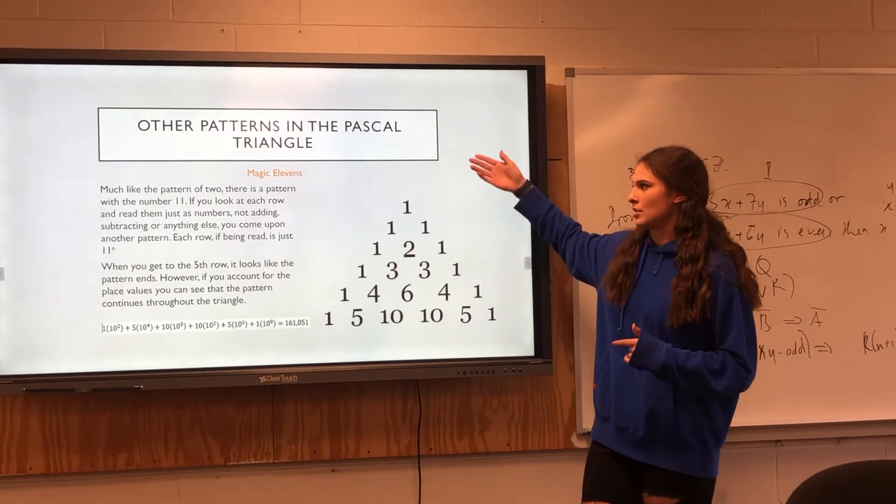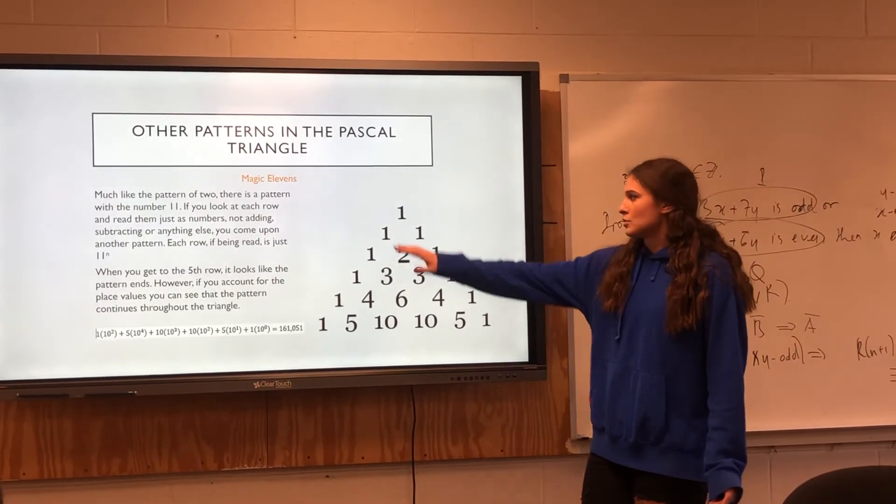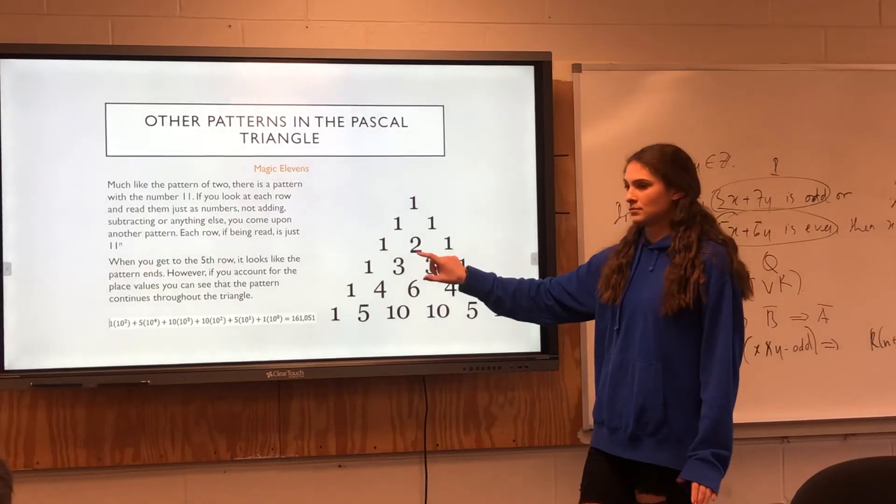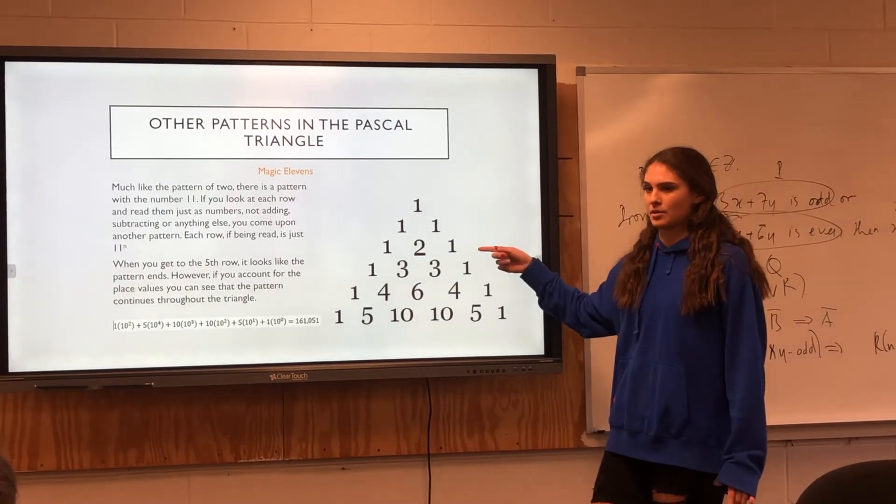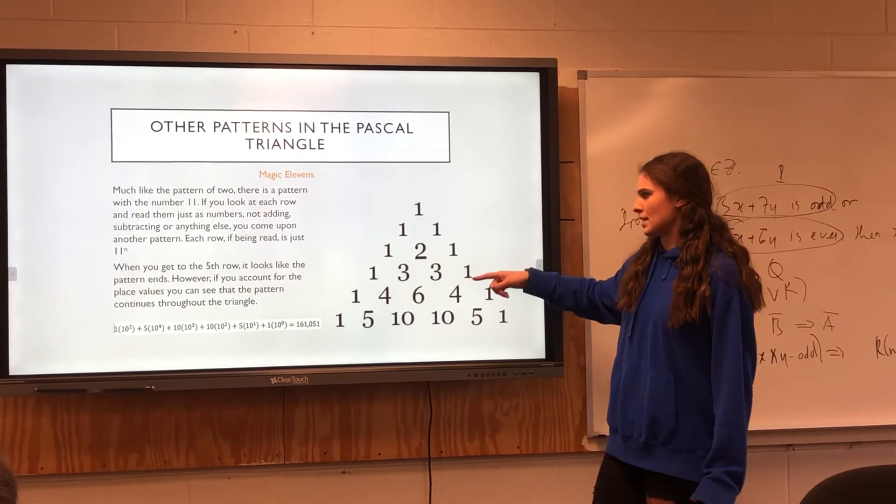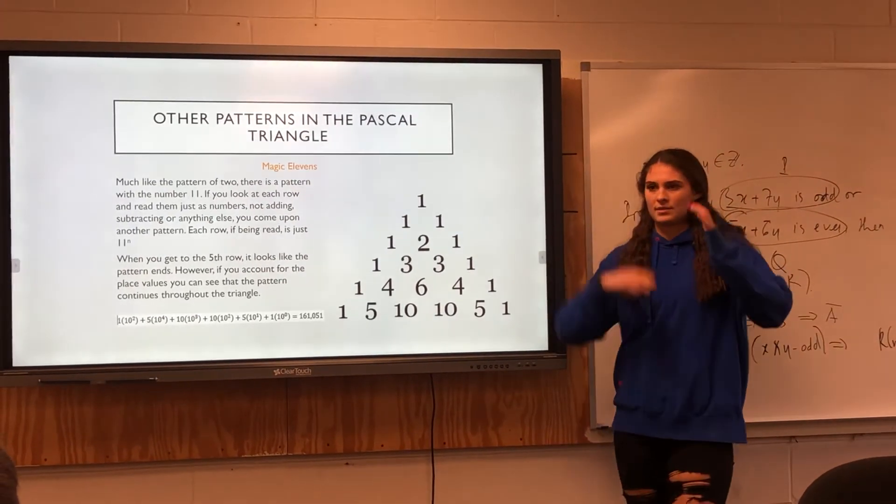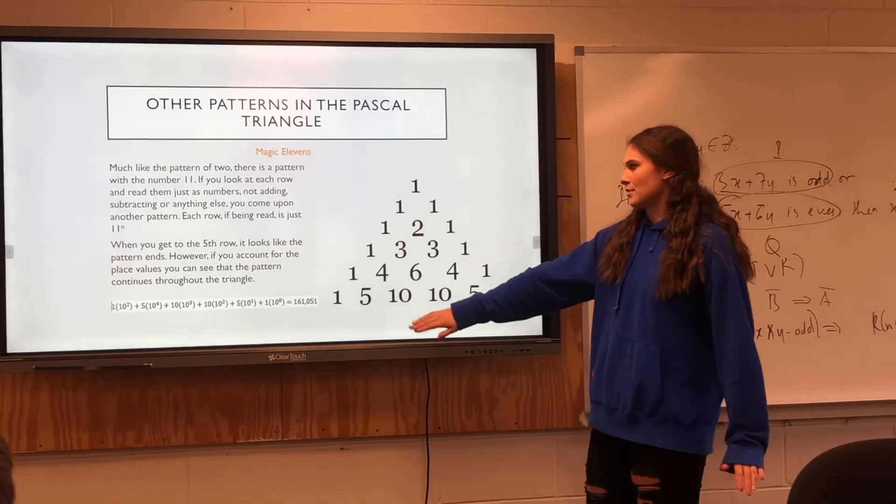And then with that, there's also the magic 11s. If you just look across them and just read them as 121, that's 11 to the second power. If you keep on doing that, it'll keep on following 11 to the nth power. But when you get to the fifth row, you're like, hey, well that's not 11 to the fifth power.